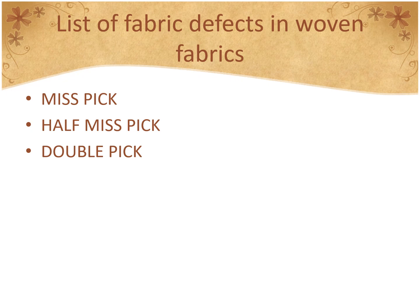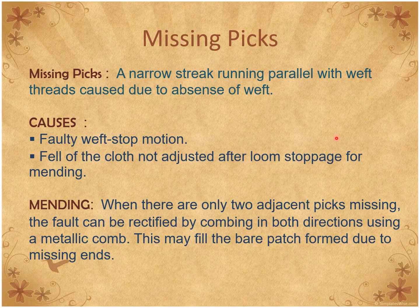Here are some fabric defects which may occur during production of fabric. The first one is misspick, the second is half misspick, and the third is double misspick or double pick. A misspick is a narrow streak running parallel with the weft, caused due to the absence of a pick. In a one-by-one view it may be called a double pick or misspick. If we find a double pick, the density of the pixel will be higher at that point; if we find a misspick, the density of the pixel will be lower.